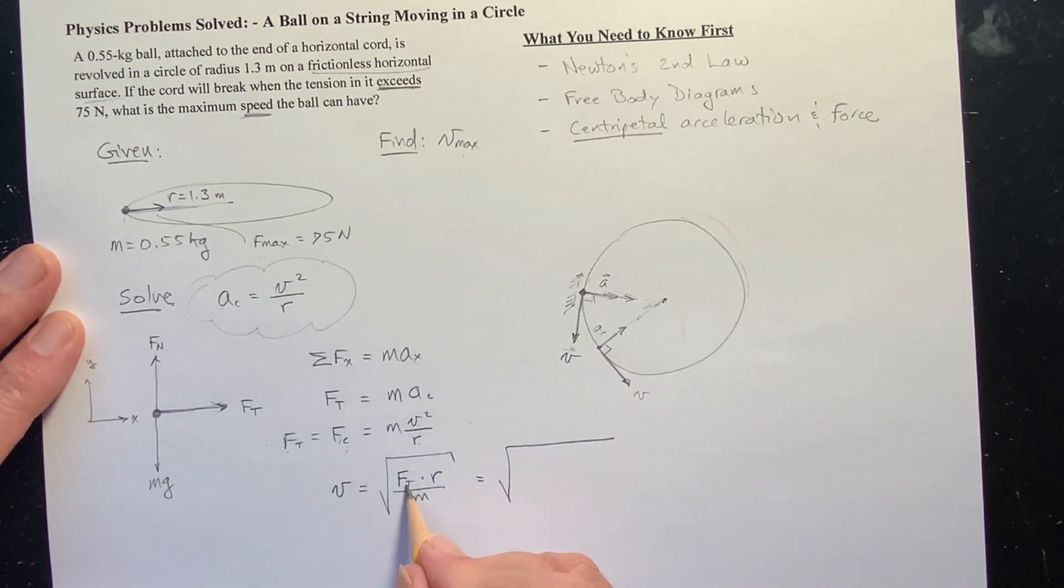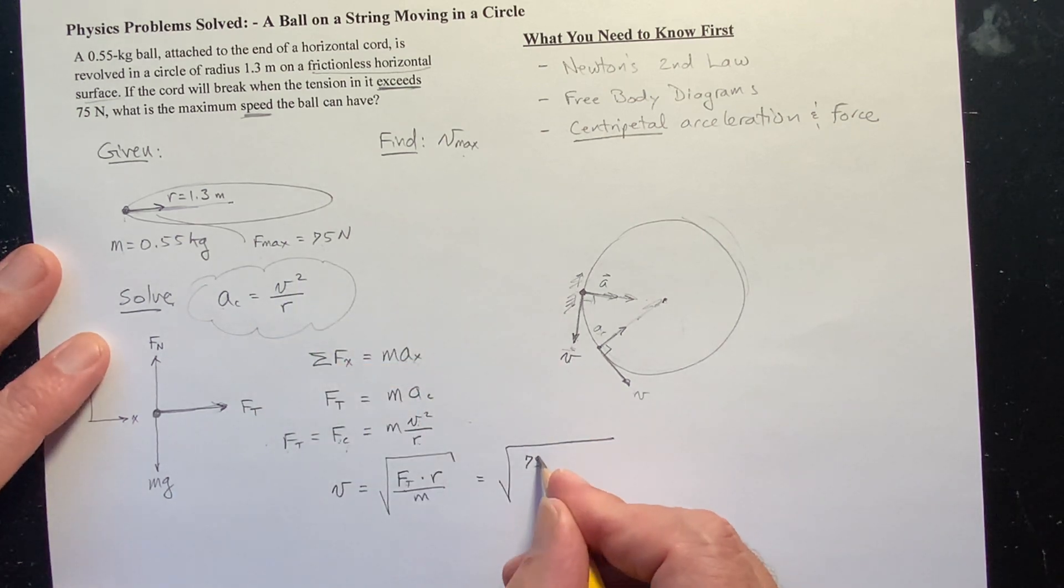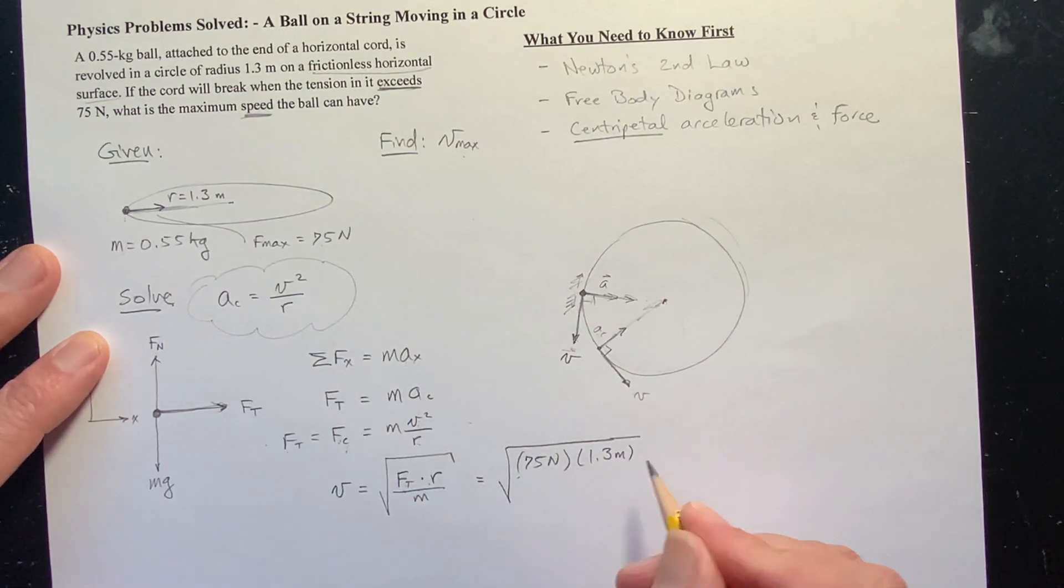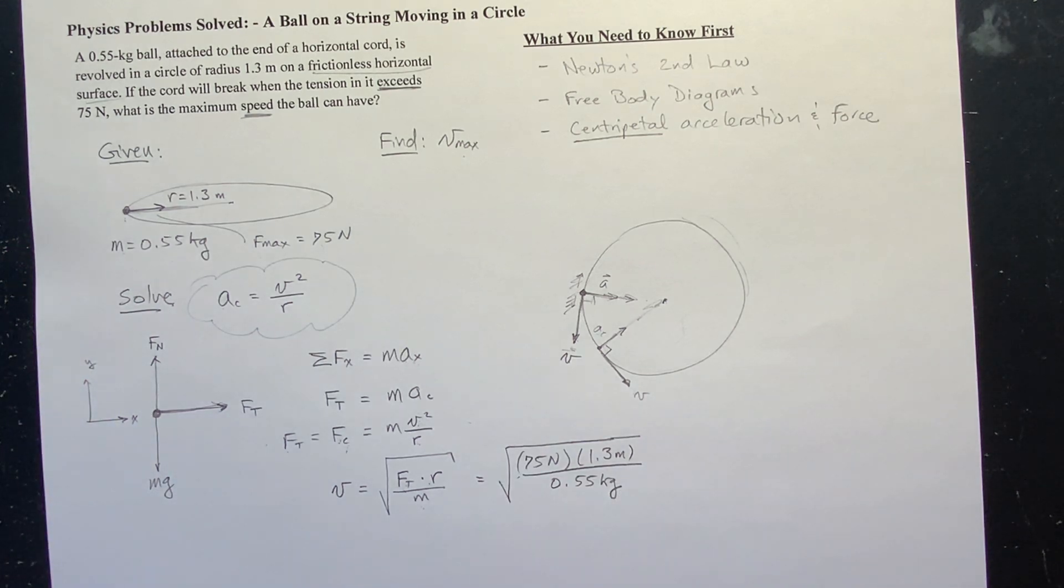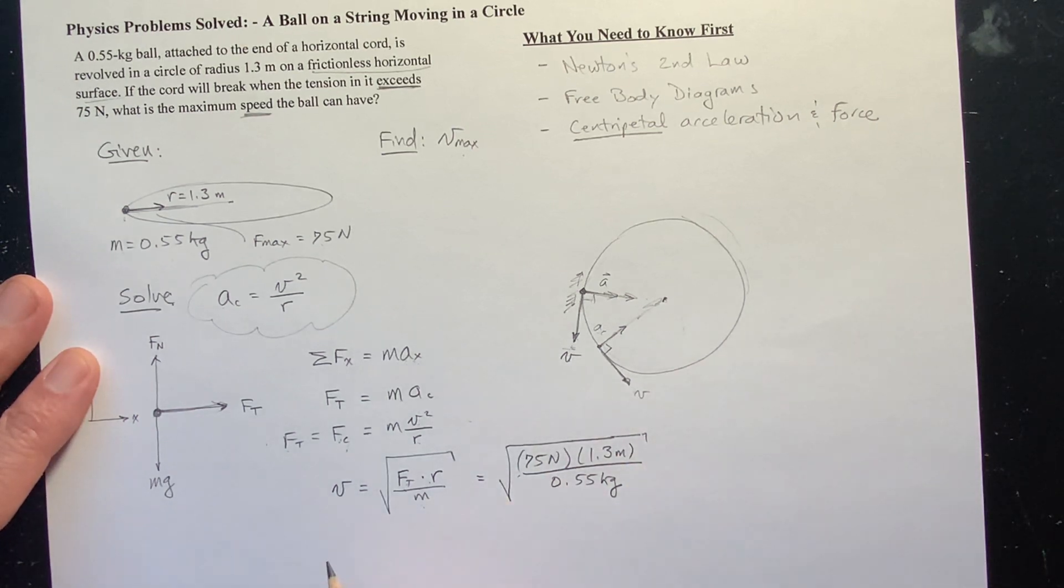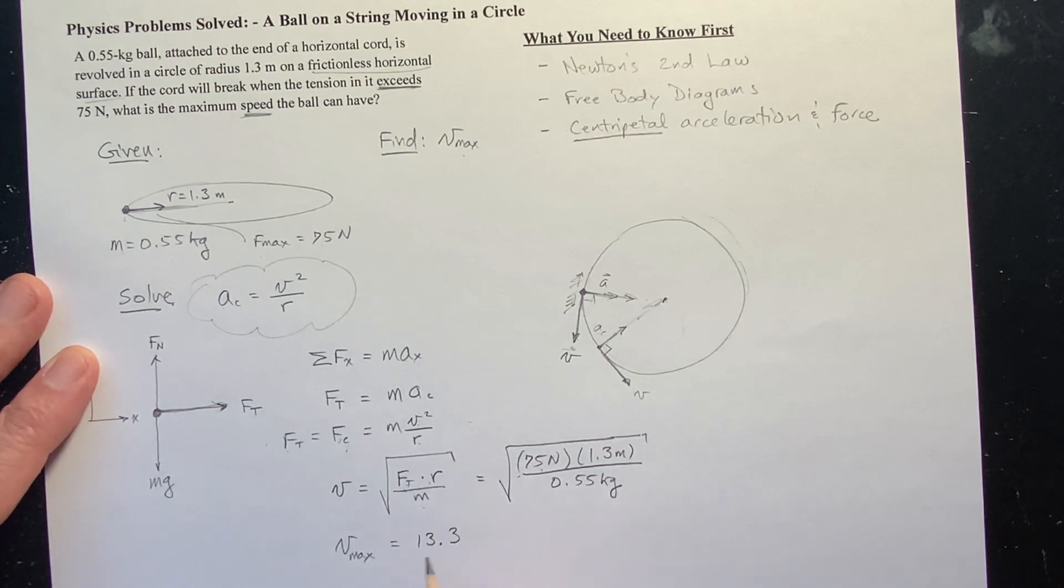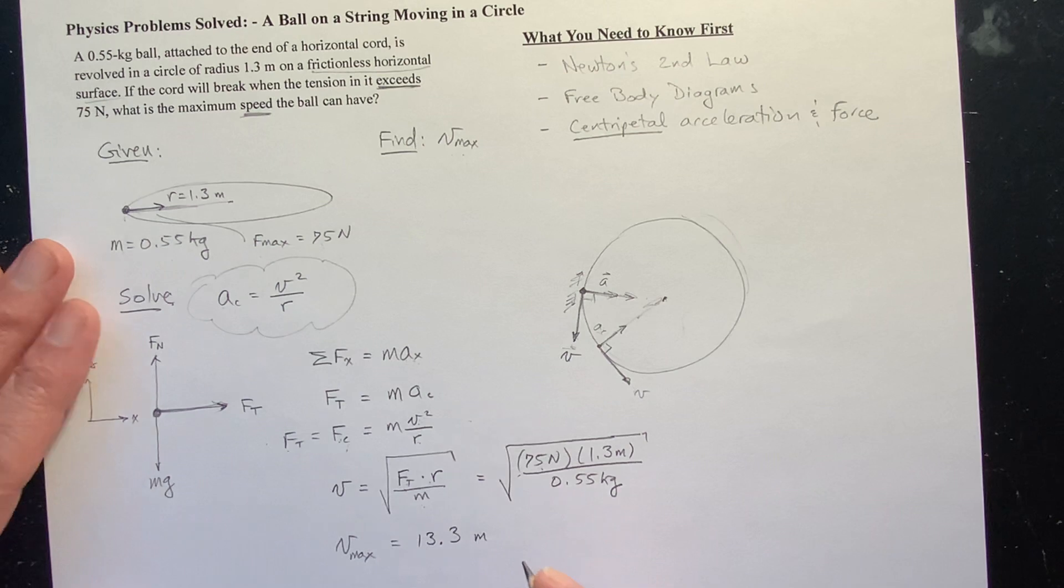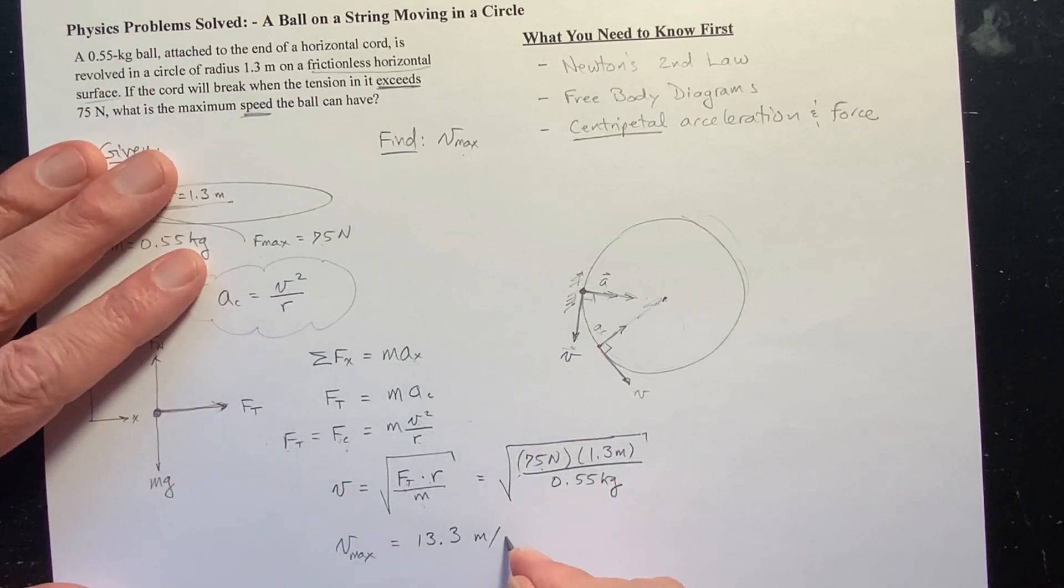Now I'm ready to plug in my values. Well, the maximum possible tension force is given to be 75 newtons. The radius is given to be 1.3 meters. And the mass is given to be 0.55 kilograms. So I get up my calculator and when I do all the calculations, I get my maximum speed because this is the maximum force that I can have before the string breaks. And it's 13.3, or maybe 13 if you want to round it off to two significant figures. I think the answer that my client got from his teacher was 13.3, so we're kind of playing fast and loose here with significant figures, but that's okay. 13.3 meters per second. And that is my answer.